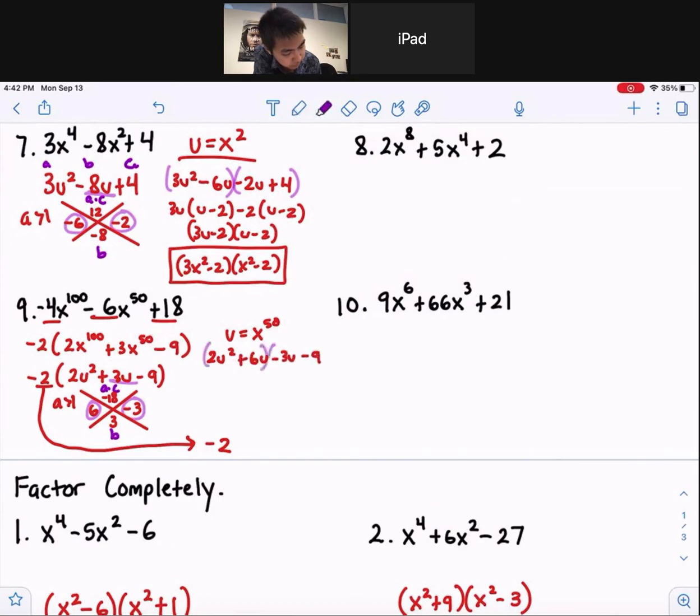We're going to group. Factor out a 2u to get u plus 3. Factor out a negative 3 to get u plus 3. Okay, 2u minus 3 times u plus 3.